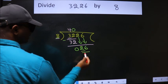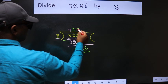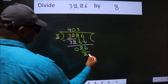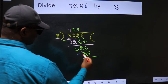So, 26. A number close to 26 in 8 table is 8 threes 24. Now we subtract. We get 2.